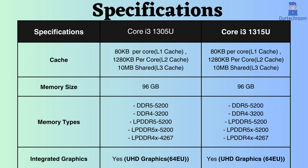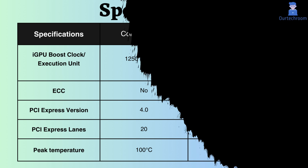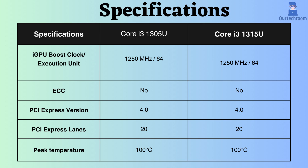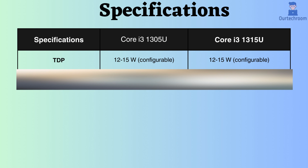Integrated graphics are supported by both processors, along with the same graphics processor support. They also share the same frequency for graphics and have the same execution units. Neither processor supports ECC, making them unsuitable for critical systems like workstations and servers. They both support PCIe version 4 and have 20 PCIe lanes. The peak temperature supported by both processors is 100 degrees Celsius. The TDP of both processors is configurable and ranges from 12 to 15 watts, making them efficient in terms of power consumption.